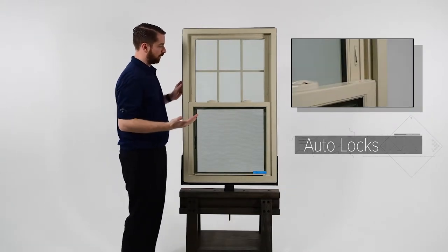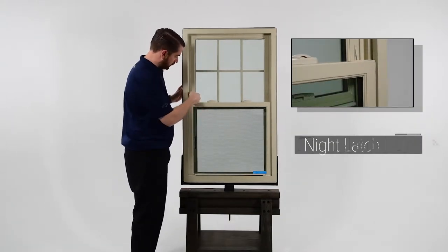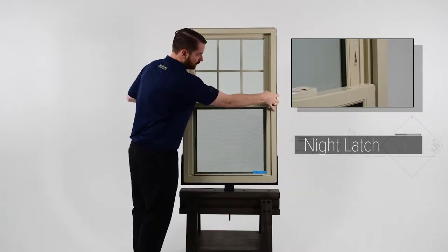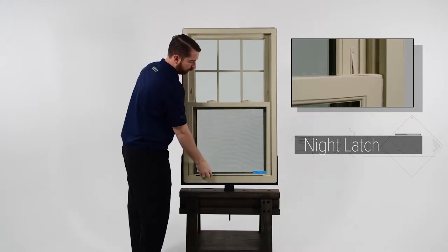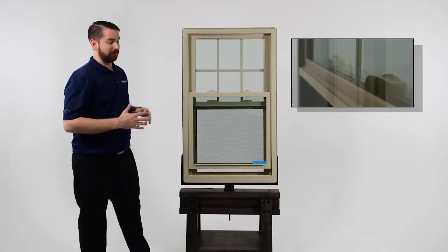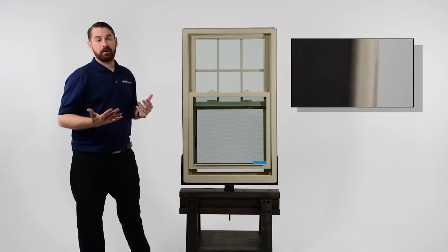Next we'll be talking about the night latches. You can extend these little night latches, which allows you to open the window for ventilation, maybe on a cool summer night, while still having some security even though your window is unlocked.